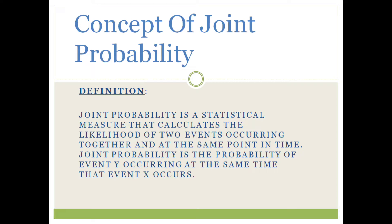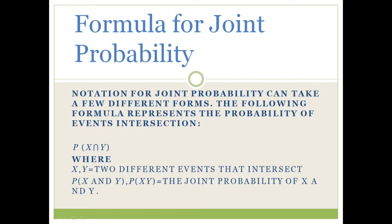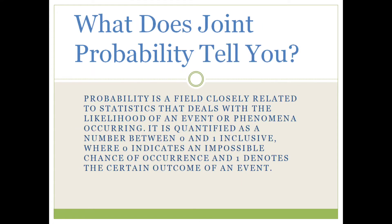Coming to the formula of joint probability, there are many different forms, but the following formula represents the probability of events intersection: P(X∩Y), where X and Y are two different events, and P(X) and P(Y) are the joint probability of X and Y.